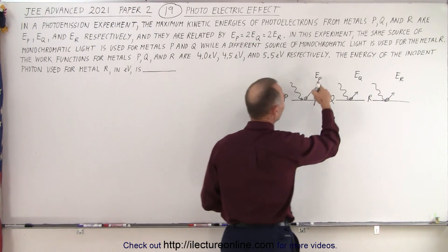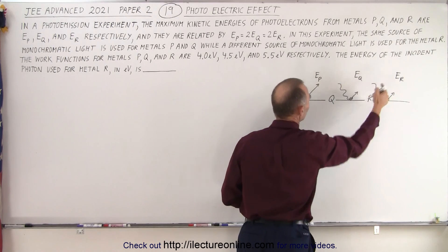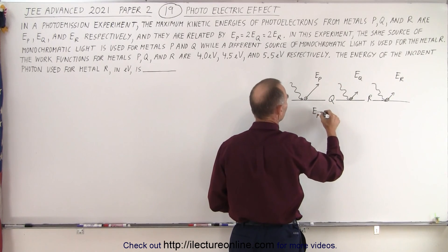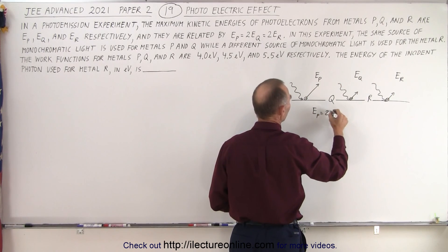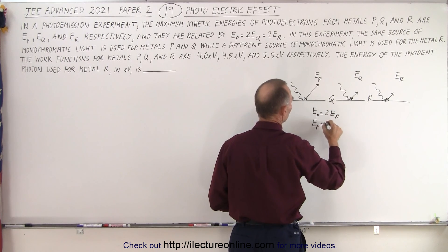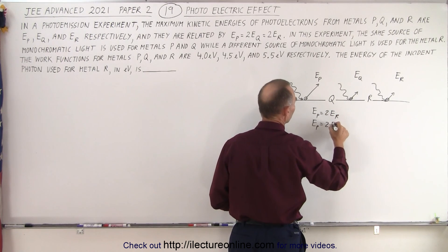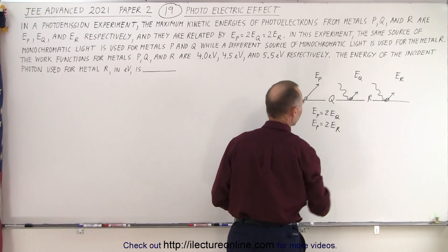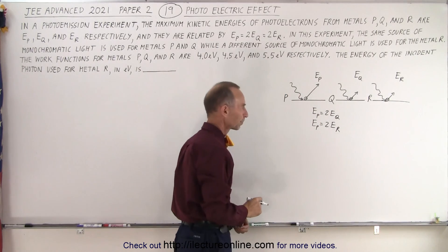So E_p = 2·E_q = 2·E_r. We can write E_p = 2·E_r and E_p = 2·E_q.